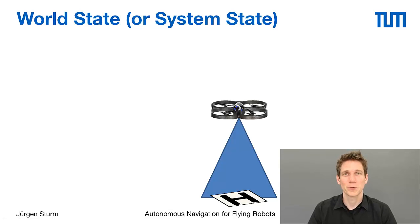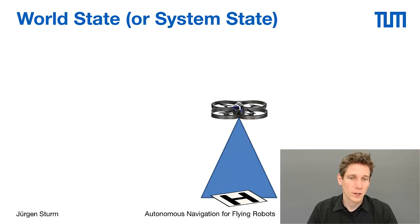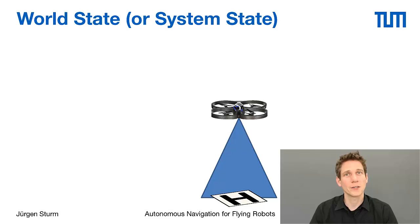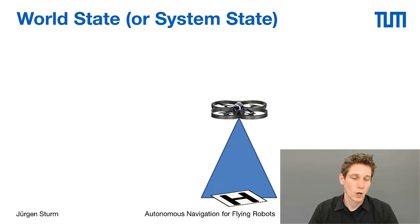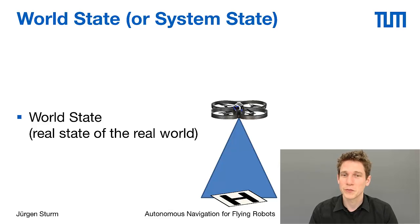Before we dive into the technical problems, I first want to clarify a few terms. As you know from last week, we can describe the state of our system with a variable, typically referred to as the system state or the world state. This world state represents the current state of the system. For example, if we have a quadrotor flying in 3D, we could describe its state using a three-dimensional vector for its position, or its relative position to a landing site, or the position of both the landing site and the quadrotor in the world.